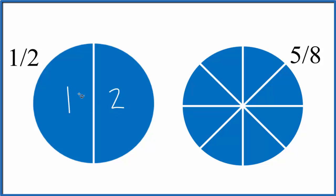So we have 1, 2 pieces. Each piece is 1 half. Over here, we have 8 pieces. And each piece is 1 eighth.